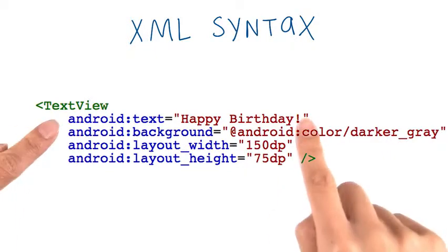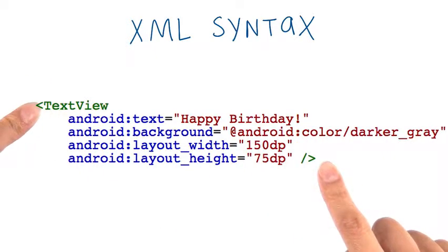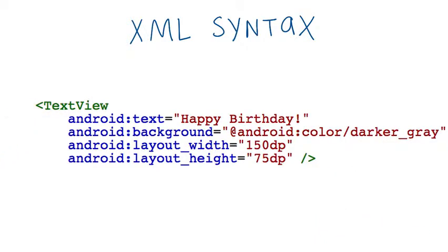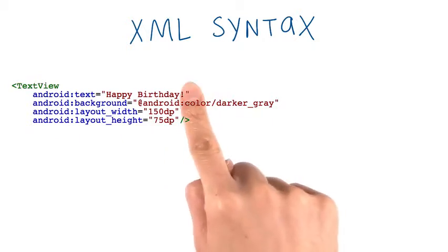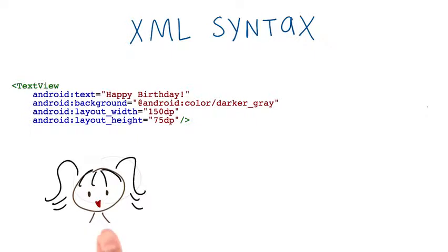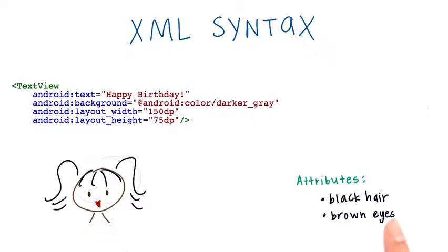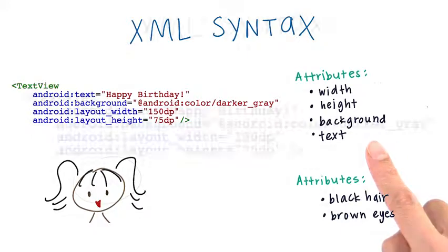You'll notice that we have a bunch of additional text inside this tag. These are called attributes. Attributes are characteristics that determine the behavior or the appearance of the view on the Android phone. For example, a person has attributes like black hair and brown eyes. A TextView has attributes like width, height, background, and text, among many others.